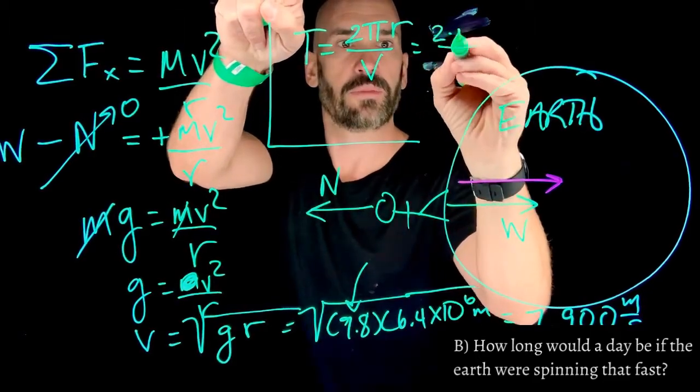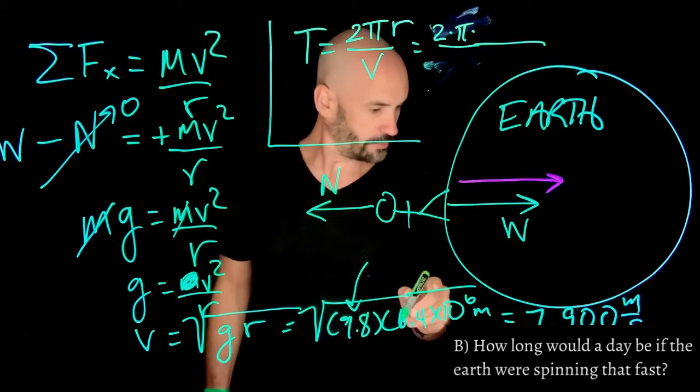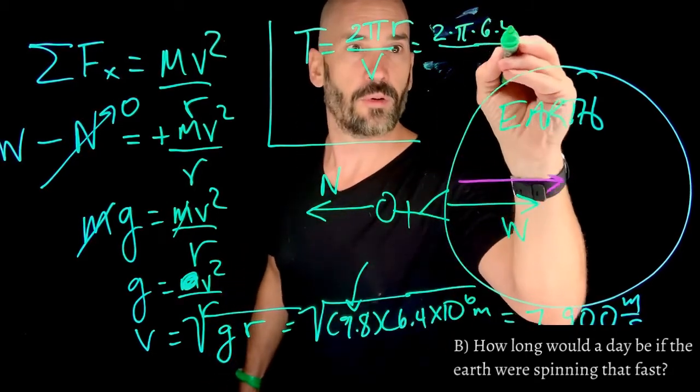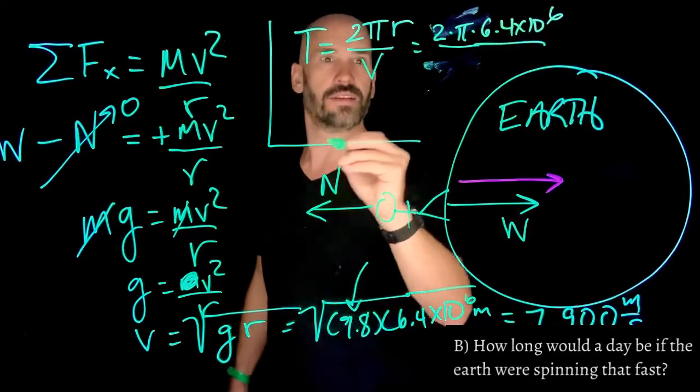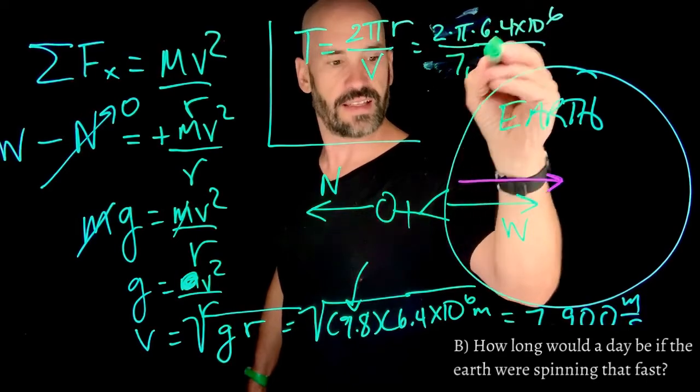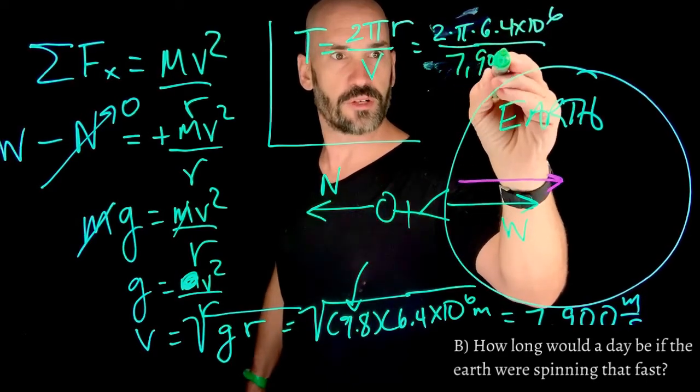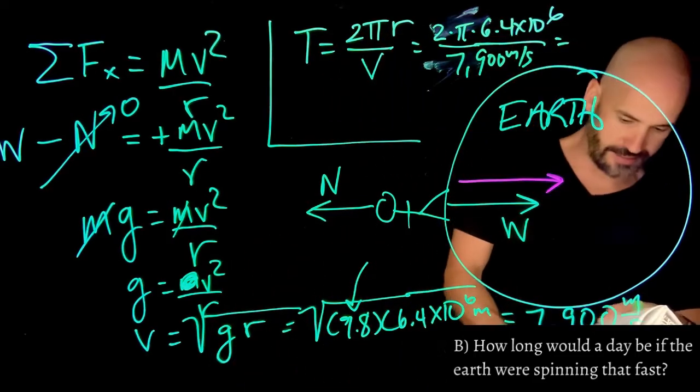I have 2 times pi times the radius of the earth, again, which is about 6.4 times 10 to the sixth. And I divide that by this guy that I got over here, which is 7,900 meters per second. For a grand total of how many seconds is that?